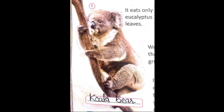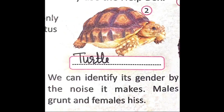Look at the second picture. We can identify its gender by the noise it makes. Males grunt and females hiss. Male turtle jo hota hai, woh grunt ki sound karta hai - short deep sound produce karta hai. Aur female jo hoti hai, woh hiss ki sound karti hai. So the correct answer is turtle.